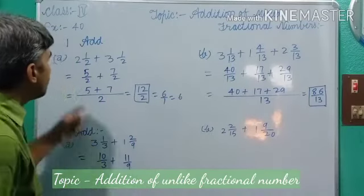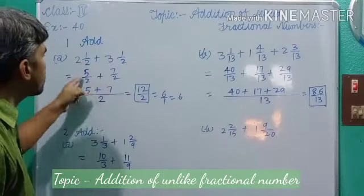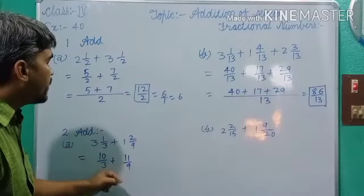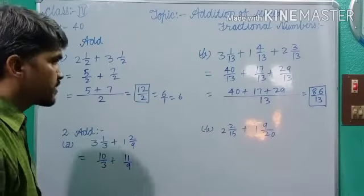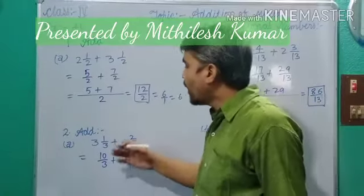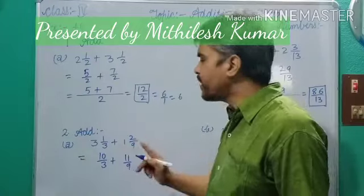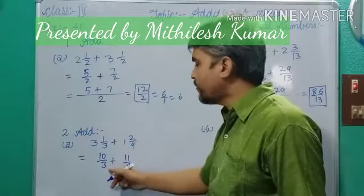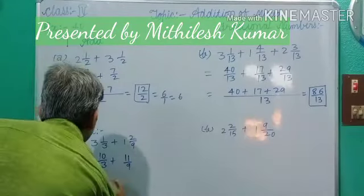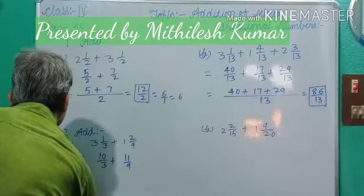Dear students, in the first question we had 5 by 2 plus 7 by 2 — these are like fractions. But here we have 10 by 3 plus 11 by 9 — this is unlike fractions. In previous classes, I taught how to add fractional numbers with unlike fractions. One method is to convert into like fractions, and one method is to directly find the LCM of the denominators.